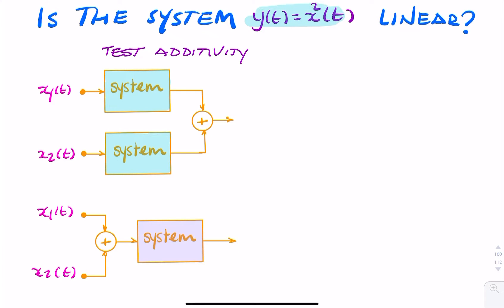Here we have a system that relates the input to the output, y of t equals x squared of t, and we want to test if it's a linear system or not.